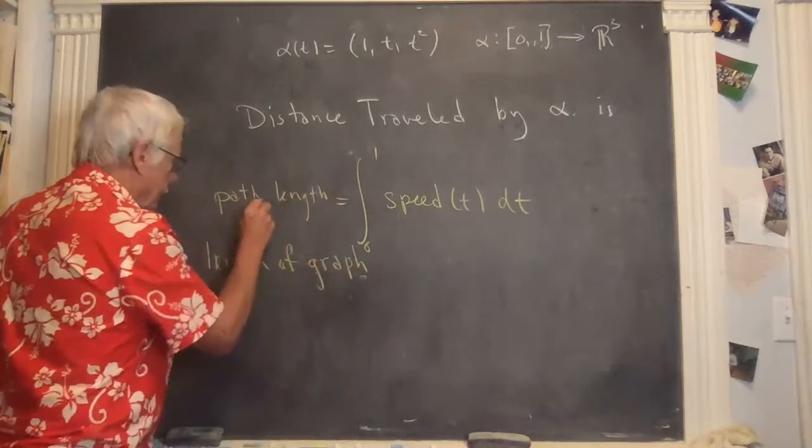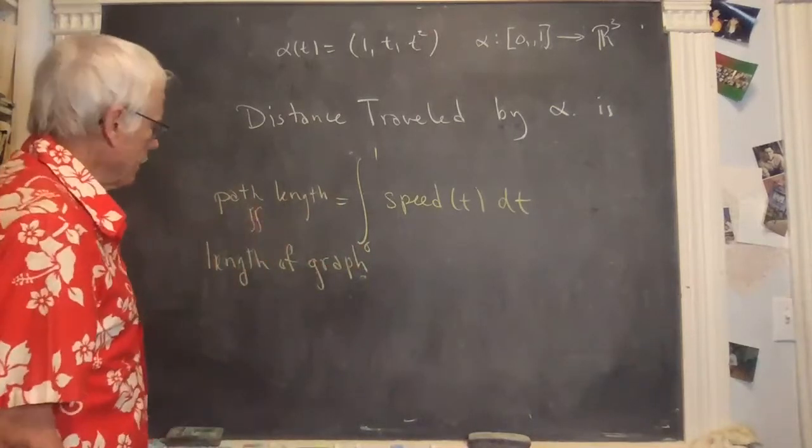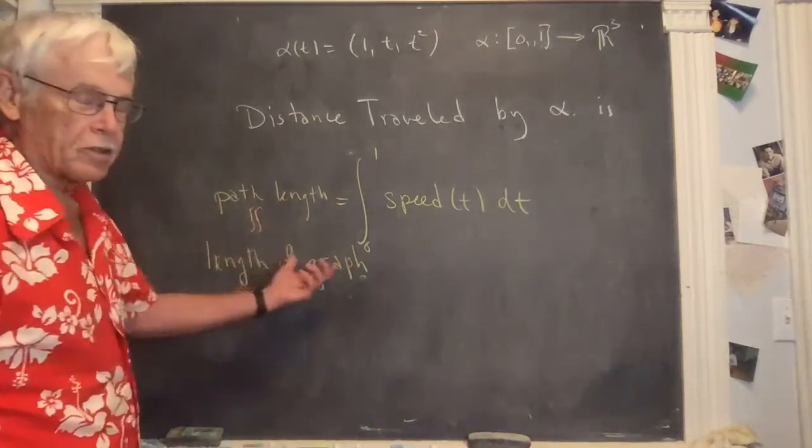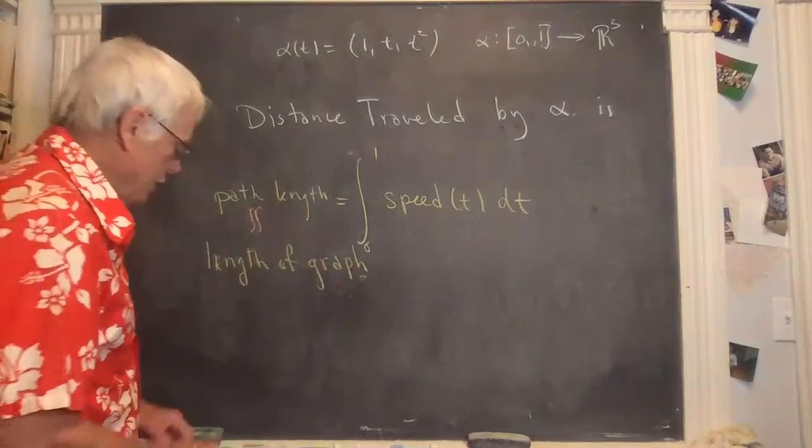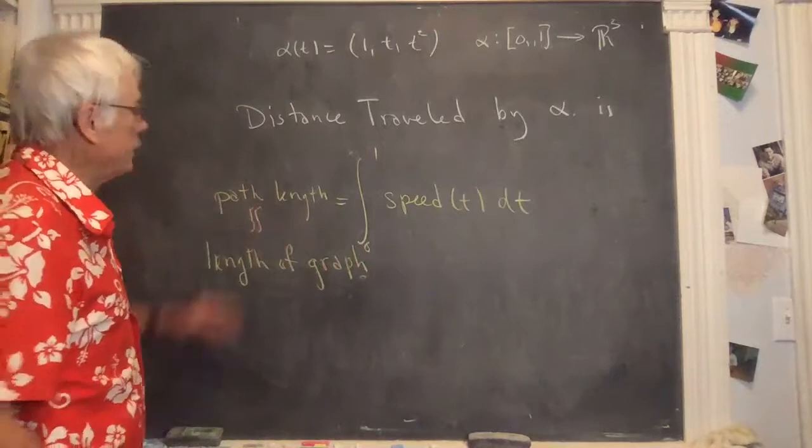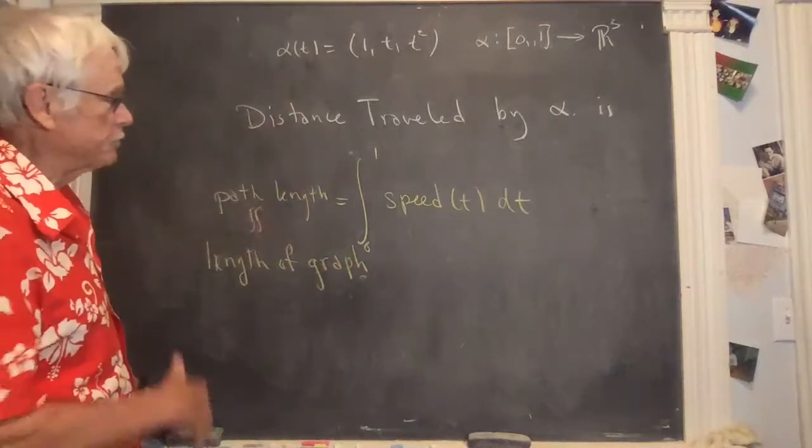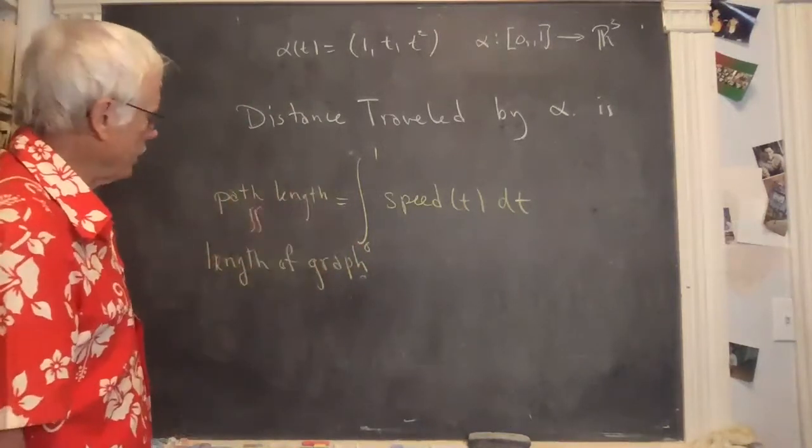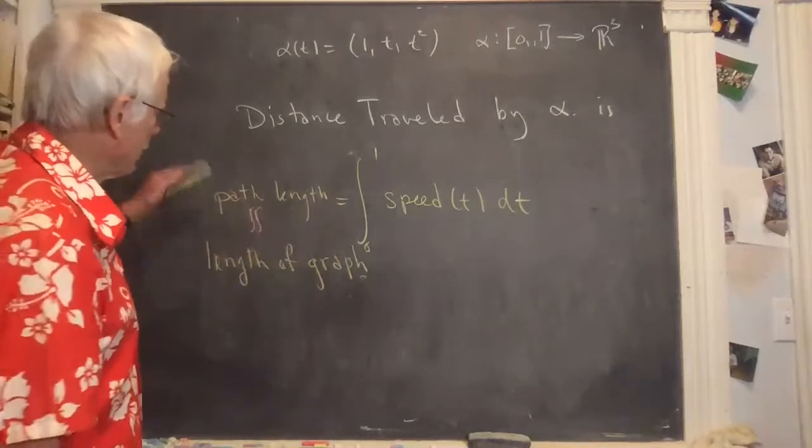And there's one little caveat I have to say here. This will be the path length. And what we'd like to say is this is the length of the graph. And this is where the caveat is. The path length is almost the length of the graph. But you have to be a little careful, and I'll show you why. In this case, it is the length of the graph.